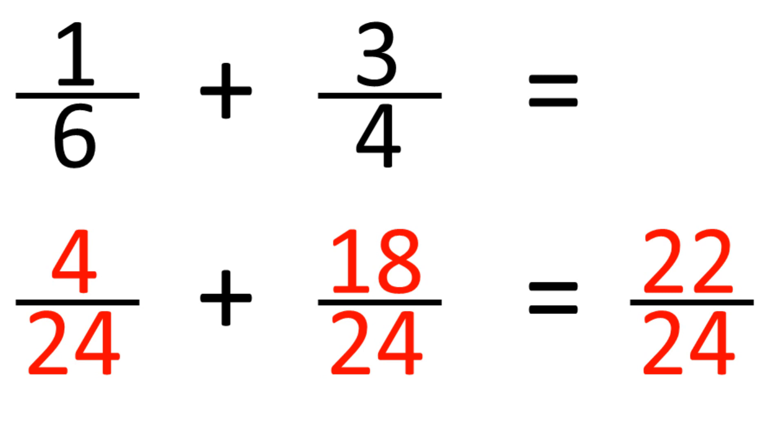And all this requires now is one more step to simplify. Both 22 and 24 are divisible by 2, and so the answer becomes 11 over 12, the same as above.